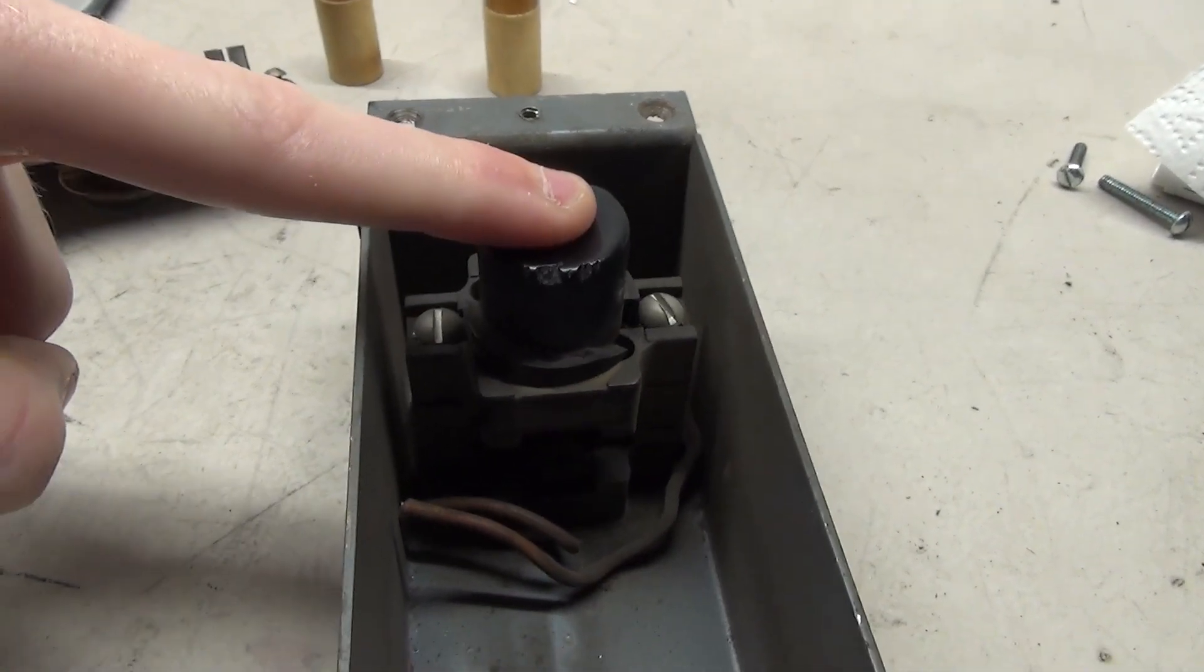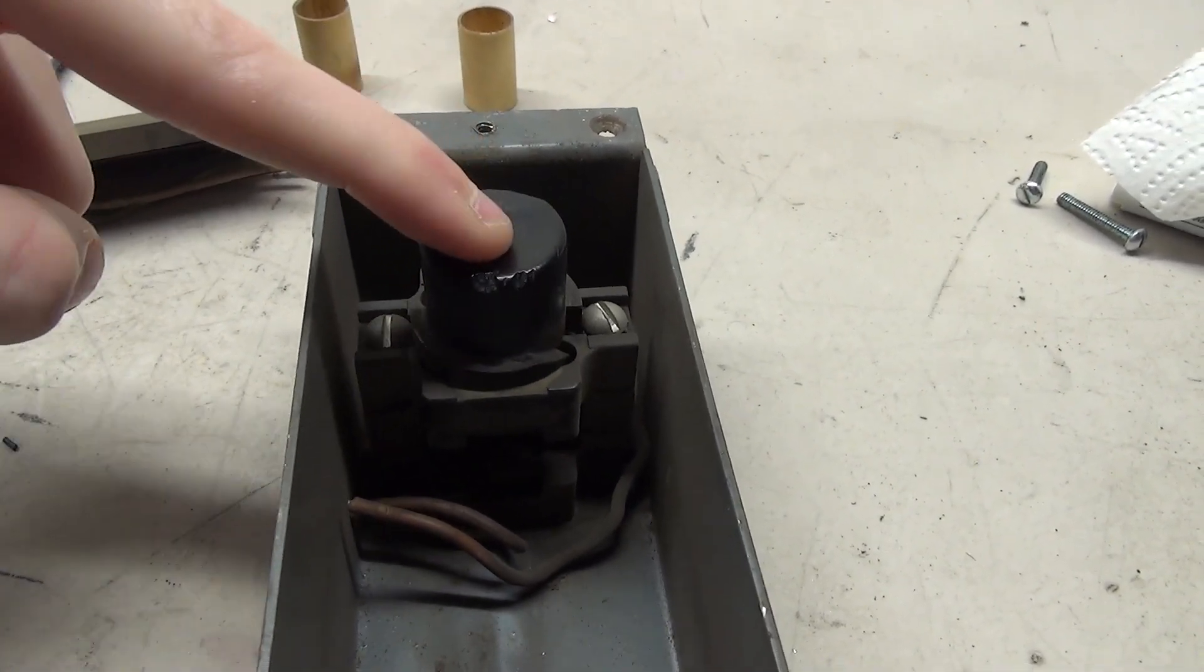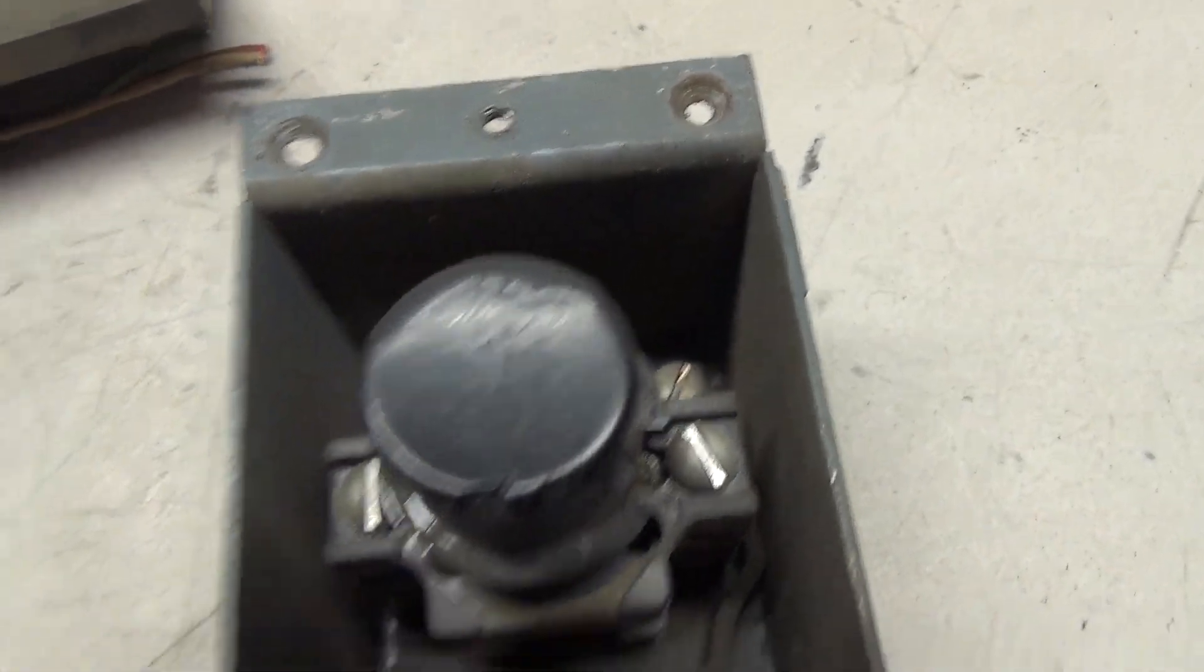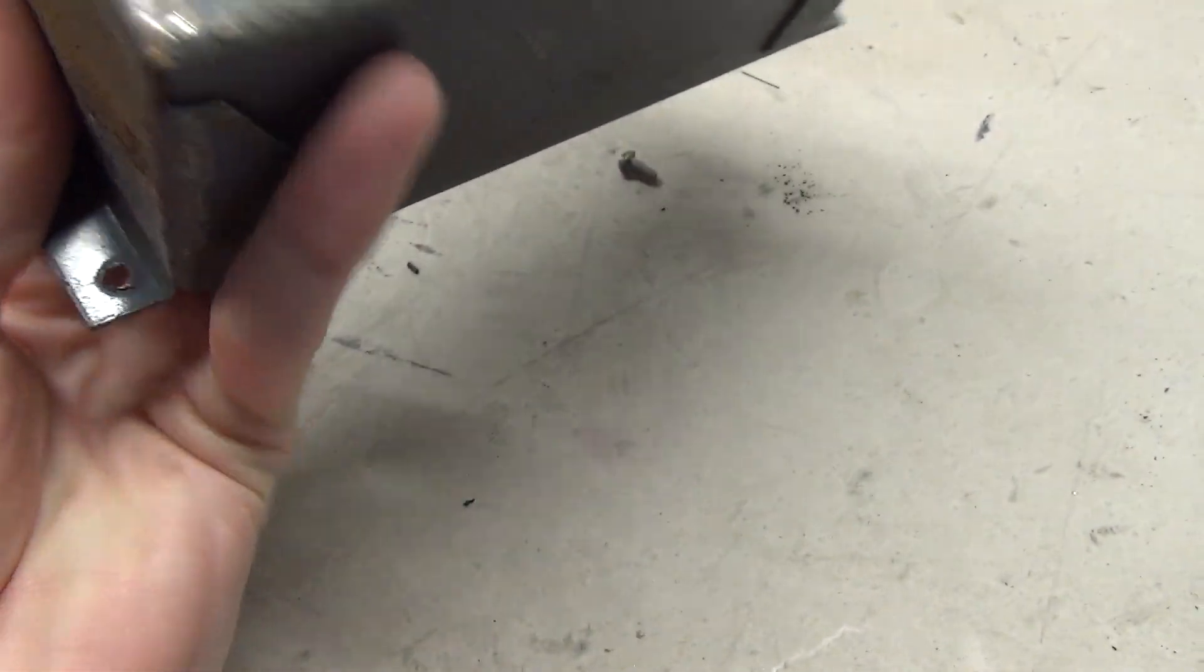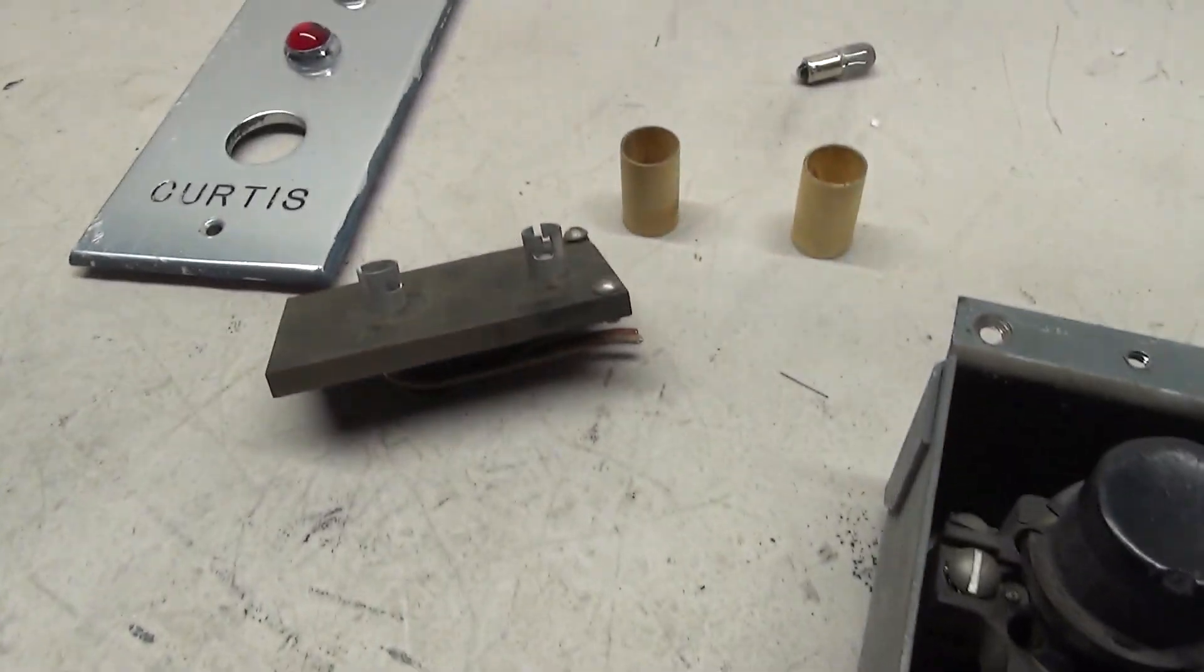So removing that one screw allows these lamps to come off. And down here is the button. You can see it's a very sturdy and very well built switch. And I actually just noticed this.